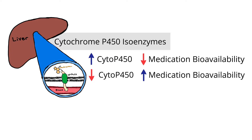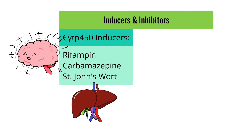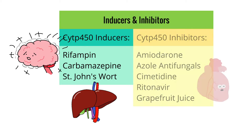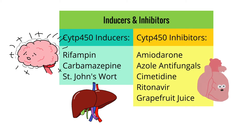The more active a CYP450 enzyme is, the less bioavailability — or amount of drug — is present in the bloodstream. The less active CYP450 is, the greater bioavailability or amount of drug is present. CYP450 inducers are those drugs that increase the activity of CYP450 isoenzymes, while CYP450 inhibitors are those that decrease CYP450 activity. It's not important to memorize which drugs affect which specific isoenzyme, but rather what are the common culprits and their general effects on CYP450.